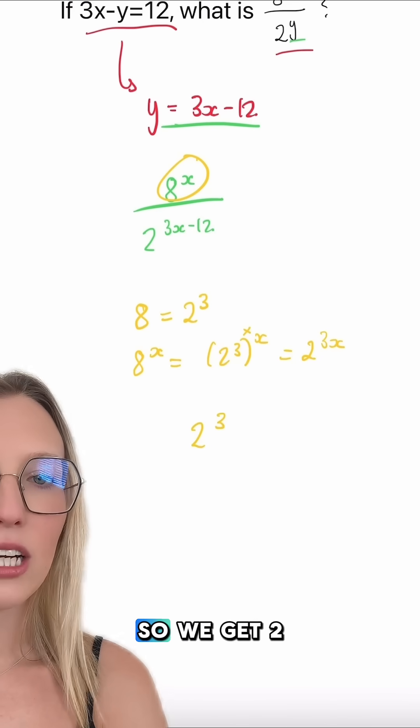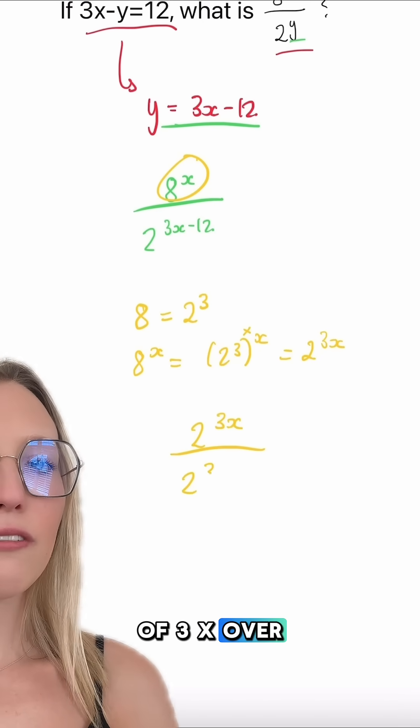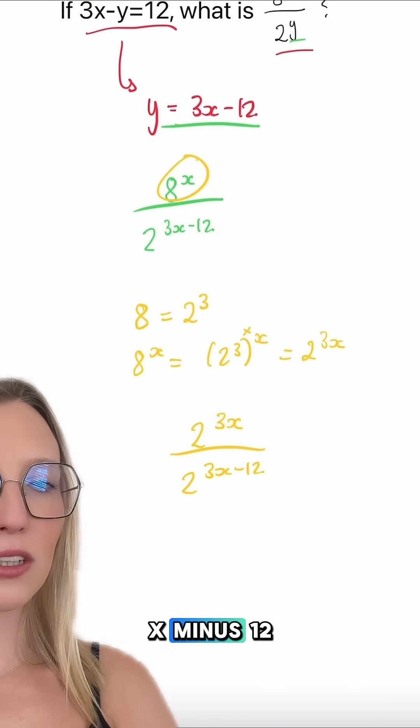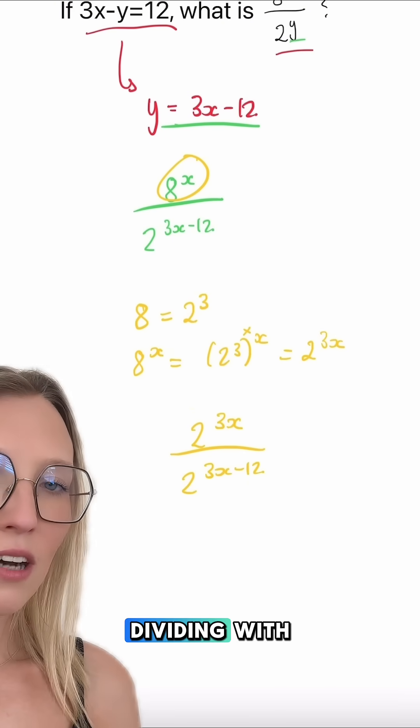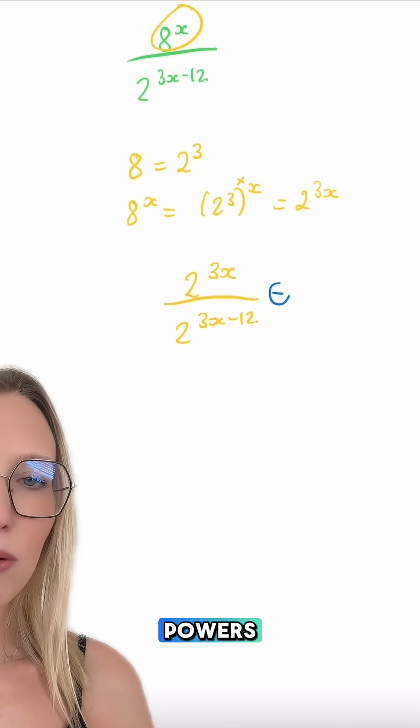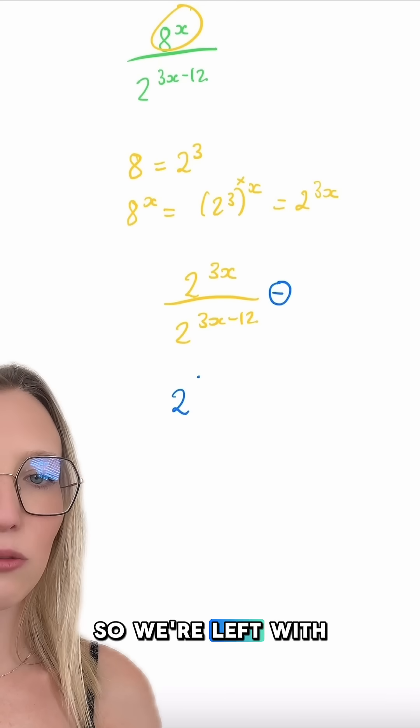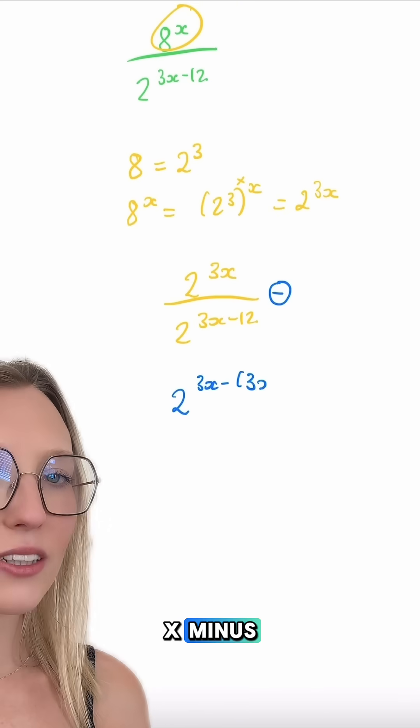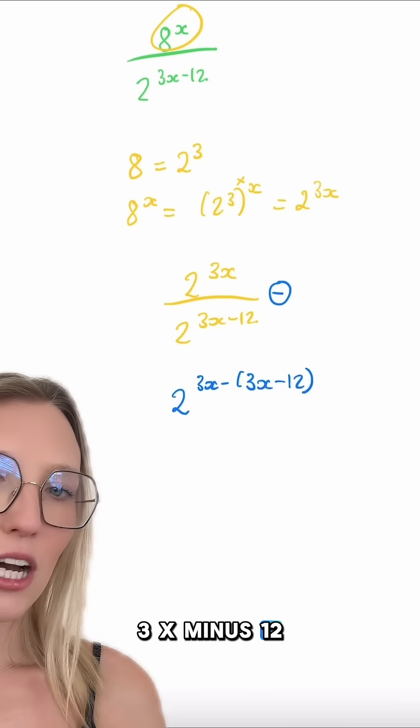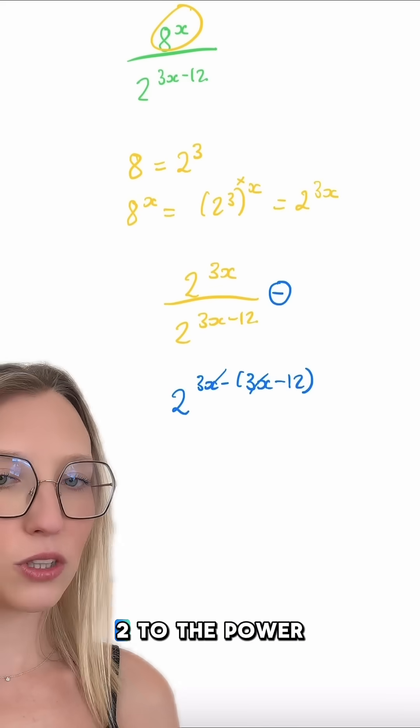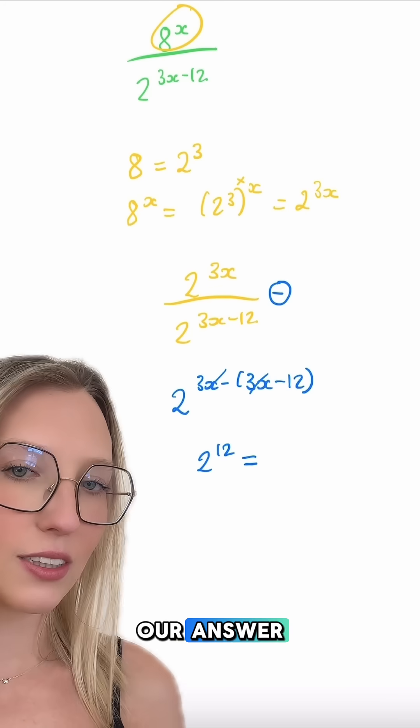Let's replace this now. So we get 2 to the power of 3x over 2 to the power of 3x minus 12. When we are dividing with the same base and powers, we can subtract those powers. So we're left with 2 to the power of 3x minus 3x minus 12, which just leaves us with the 3x cancelling and we're left with 2 to the power of 12 as our answer.